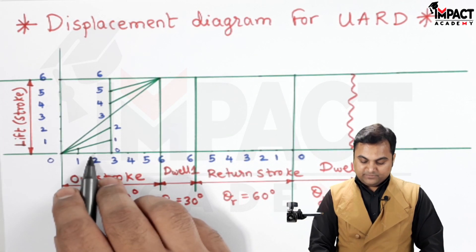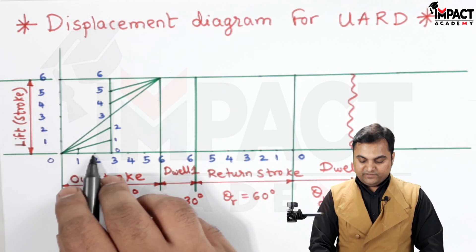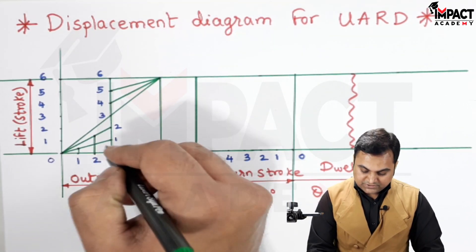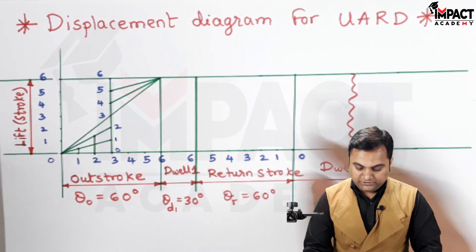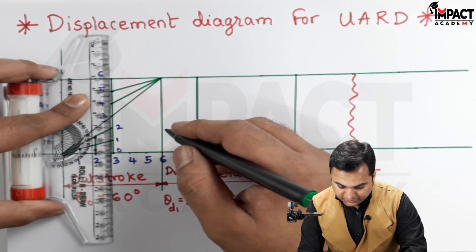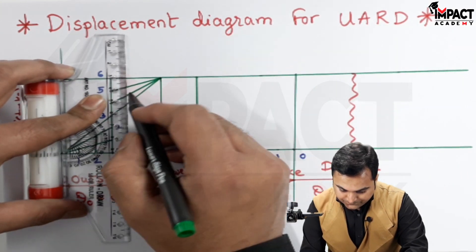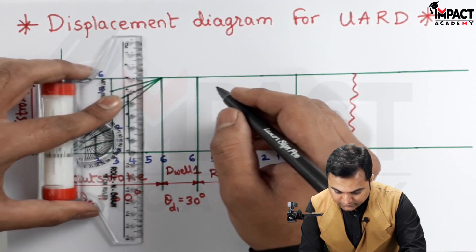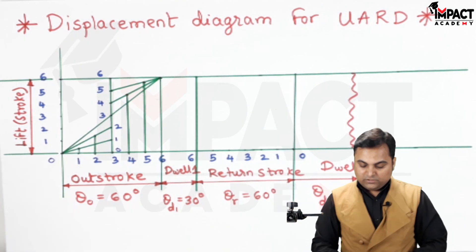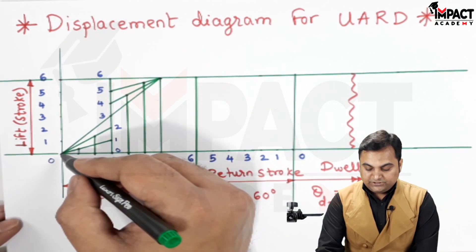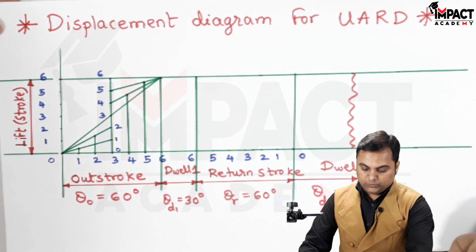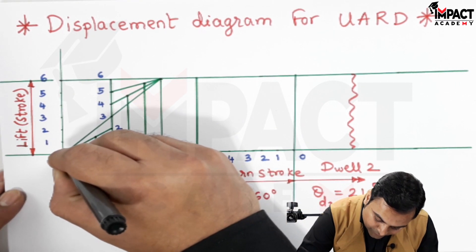Similarly, point 2 projected up where it connects 0 and 2 gives the second point. At the midpoint we already have point 3. Then point 4 is projected up to the fourth diagonal, point 5 to the fifth diagonal, and point 6 is the final one. All these points are connected in sequence with a smooth curve, indicating the UARD motion during the outstroke.